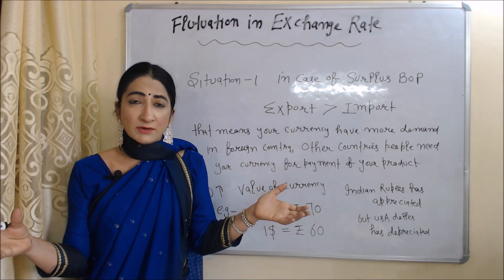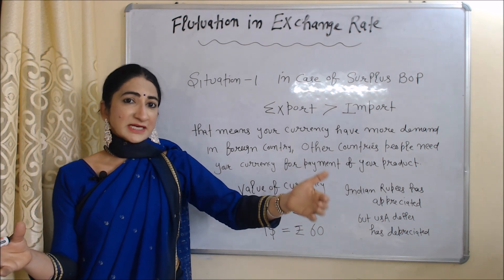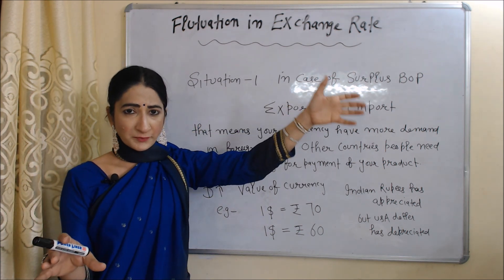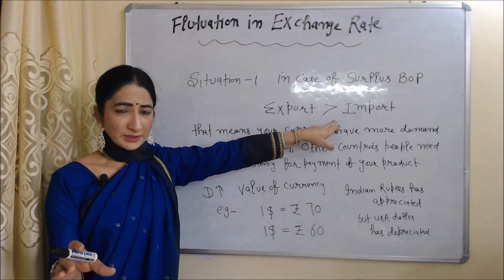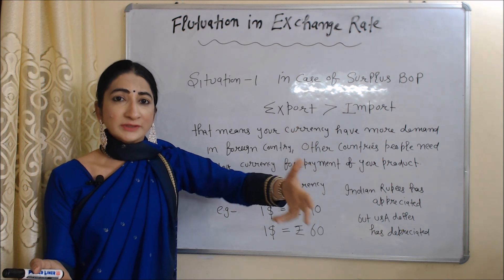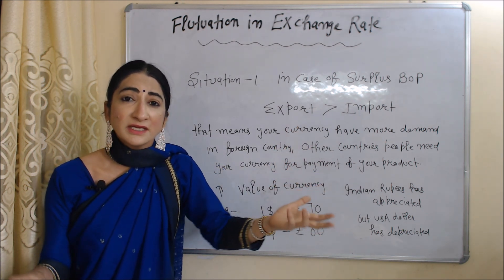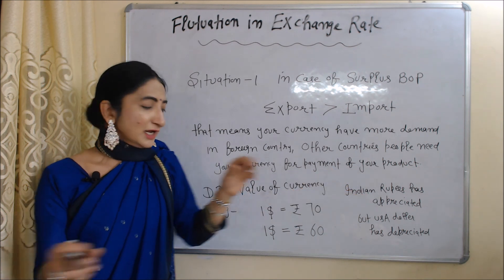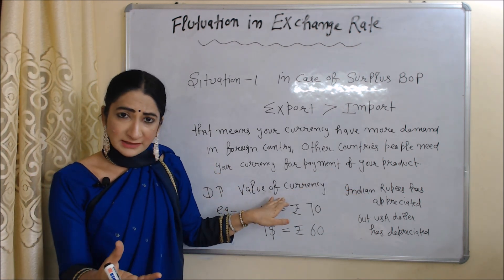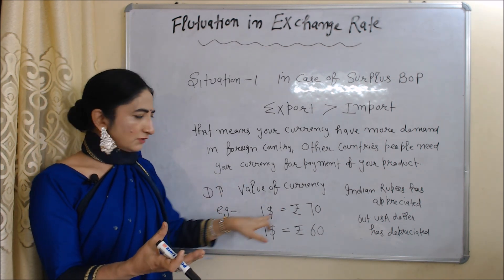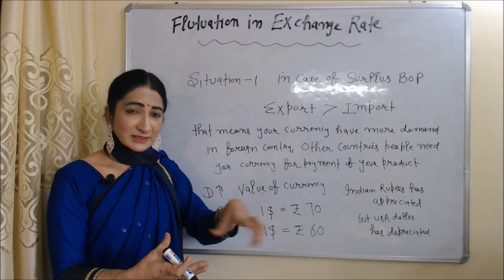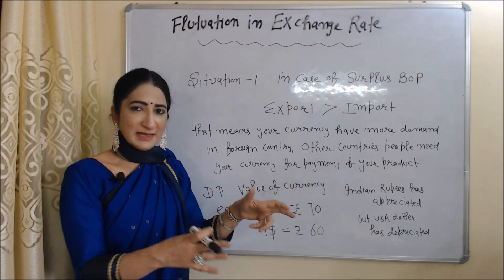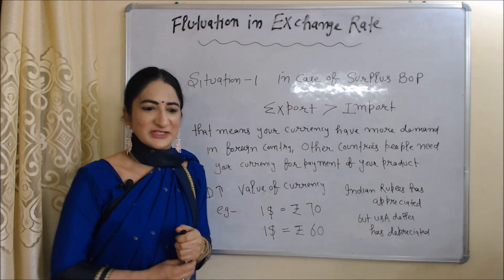Demand for currency is not always equal to supply, that's why our exchange rate fluctuates. Situation one: in case of a surplus balance of payment, our exports are more than imports. That means other countries' people need our currency for making payment for our products, so our currency demand is increasing in foreign countries. If our currency demand is increasing, that means the value of our currency is increasing. For example, earlier one dollar was equal to 70 rupees, but as our currency demand increased, now one dollar is equal to 60 rupees. So here, Indian rupees has appreciated but the US dollar has depreciated.